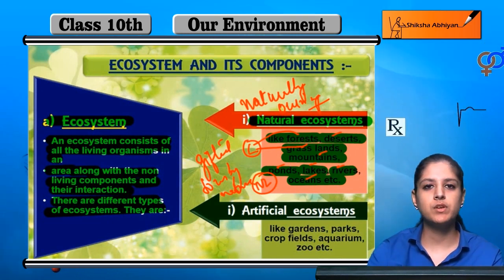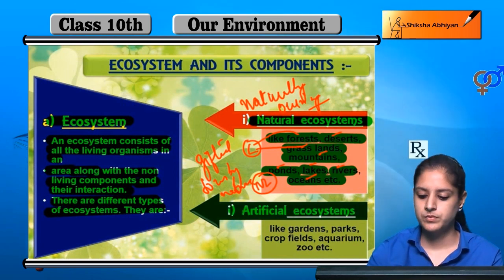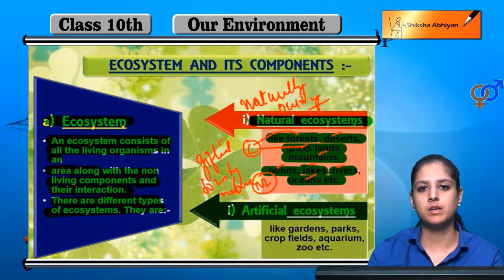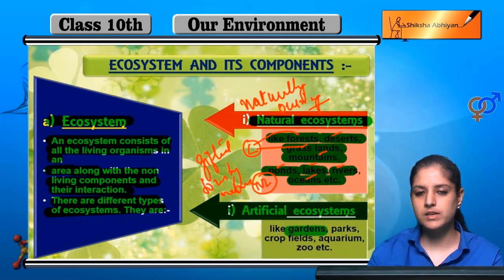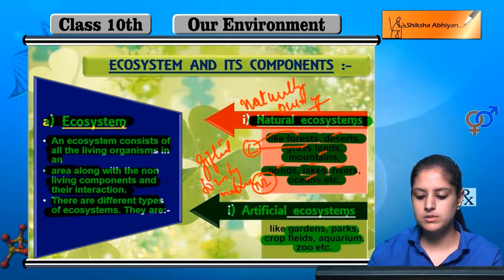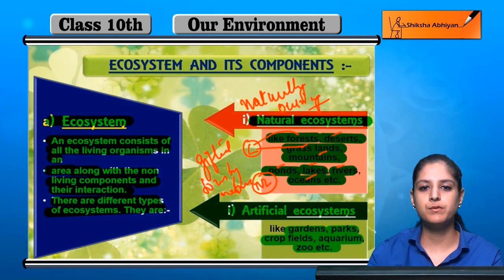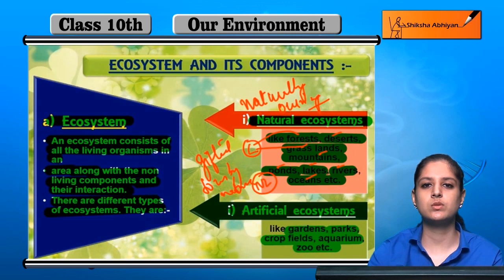The next type of ecosystem is the artificial ecosystem. Artificial ecosystems are man-made — which we have made ourselves. For example: gardens, parks, fields, aquariums, and zoos. These are all artificial, but as you can see, there are many things that exist as both living and non-living within them.